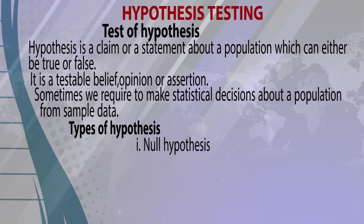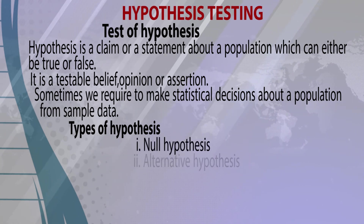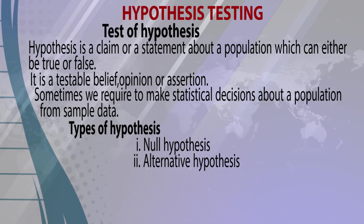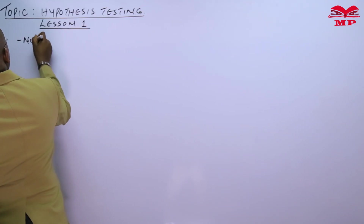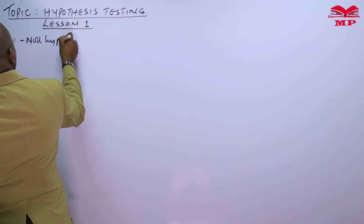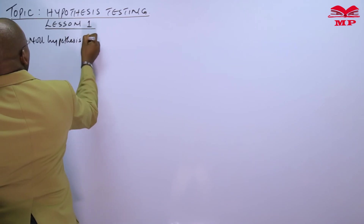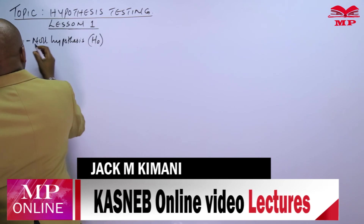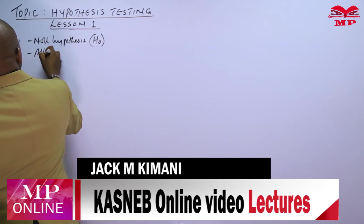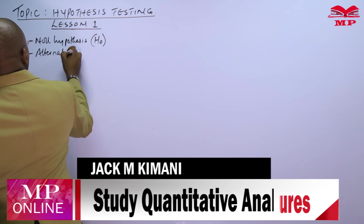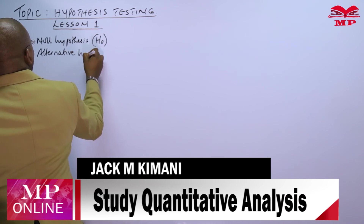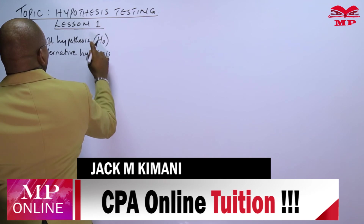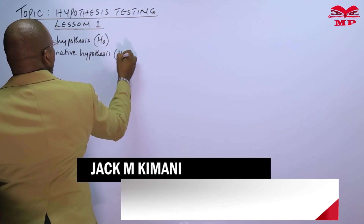There are two types of hypothesis: the null hypothesis and the alternative hypothesis. The null hypothesis is denoted by H₀ or H-naught. The alternative hypothesis is denoted as H₁.